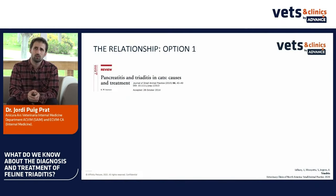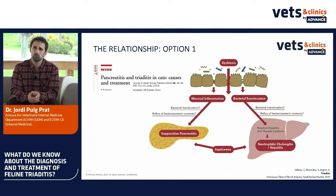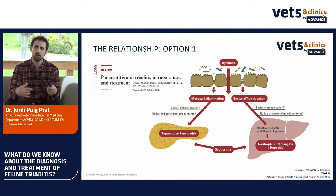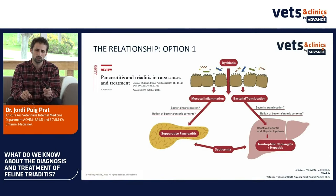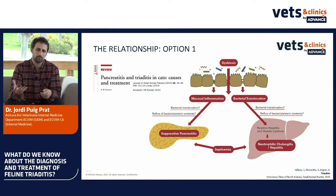There are new models shared by Kenny Simpson back in 2015 in a review called 'Pancreatitis and Triaditis in Cats: Causes and Treatment.' The first model suggests we have dysbiosis in the intestines, mucosal inflammation, and importantly, bacterial translocation. This bacterial translocation goes to the liver and also the pancreas, causing suppurative pancreatitis and neutrophilic cholangitis. In the same cat, we can also have some degree of reflux.